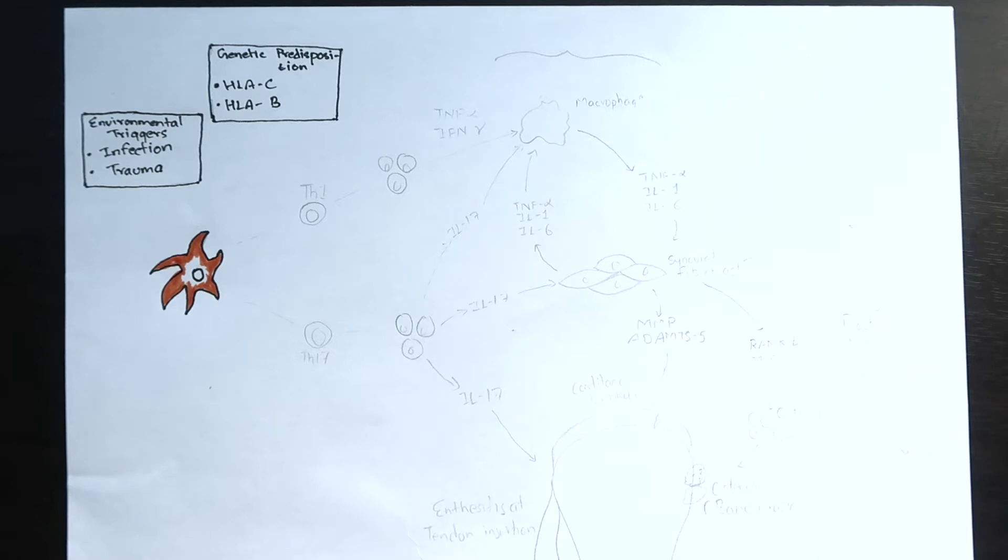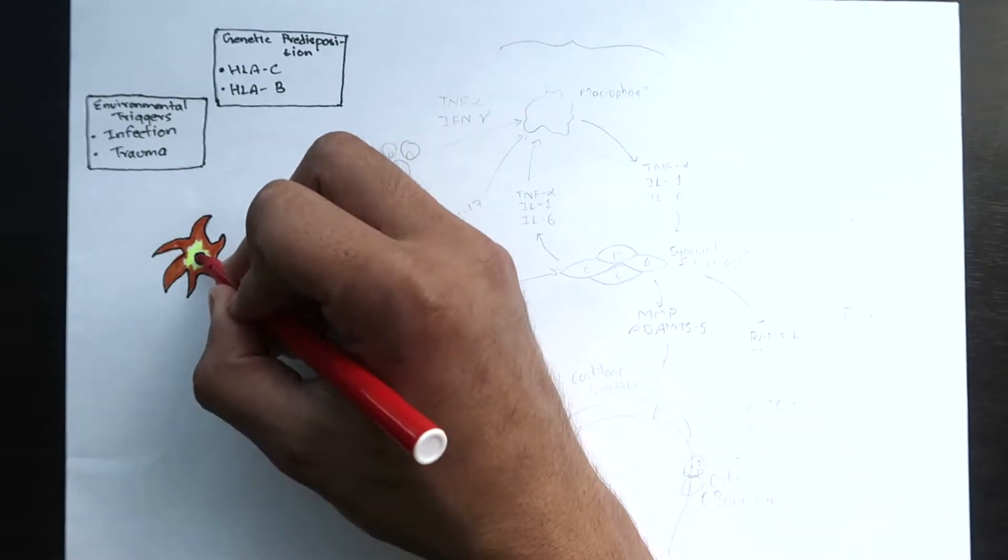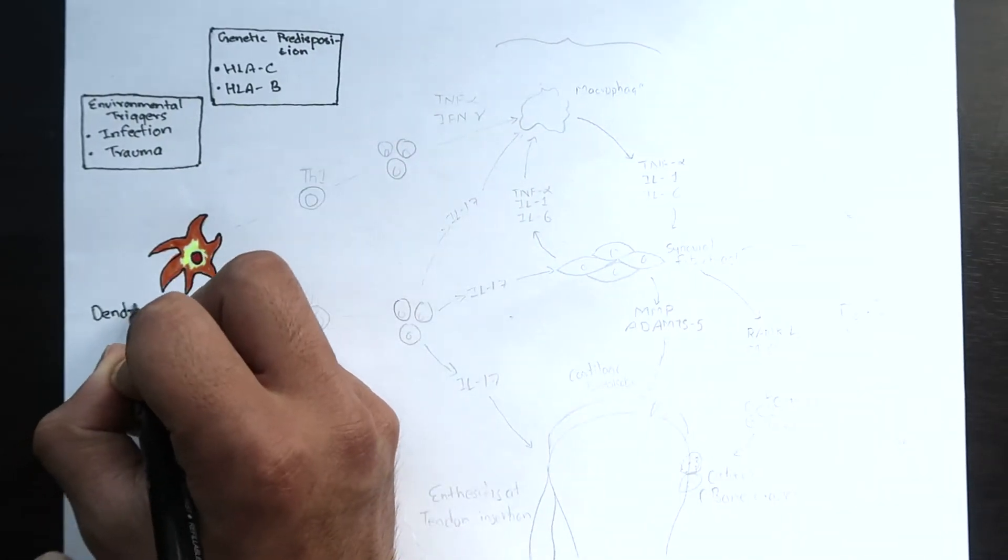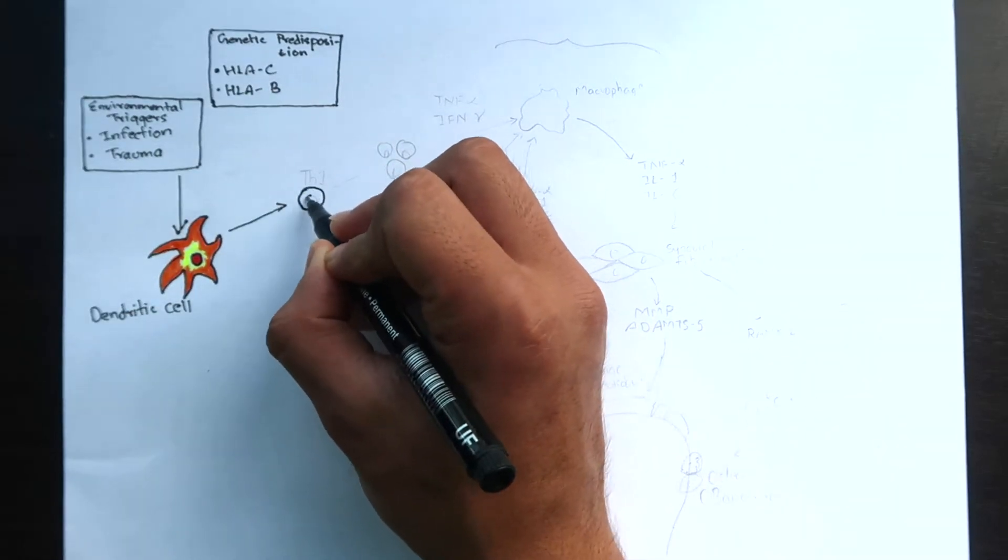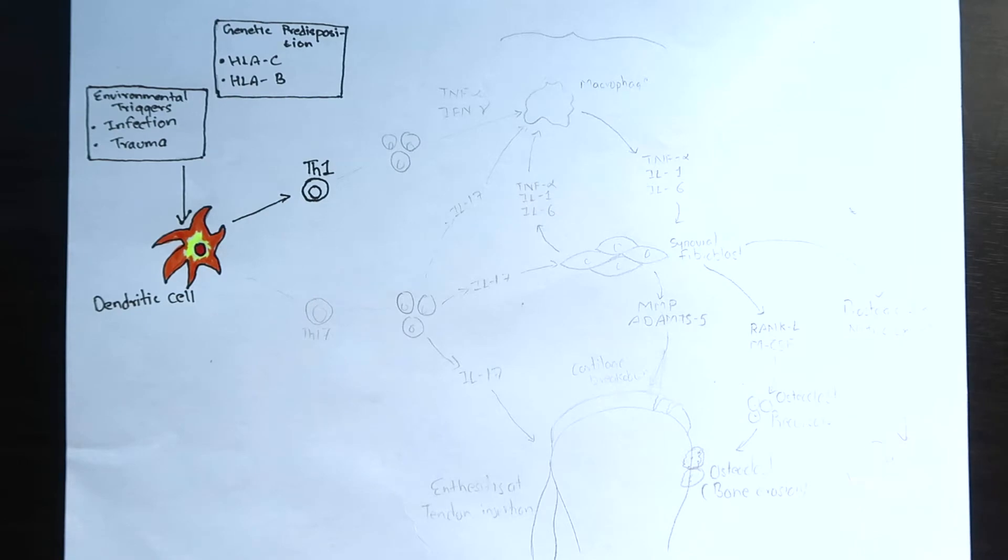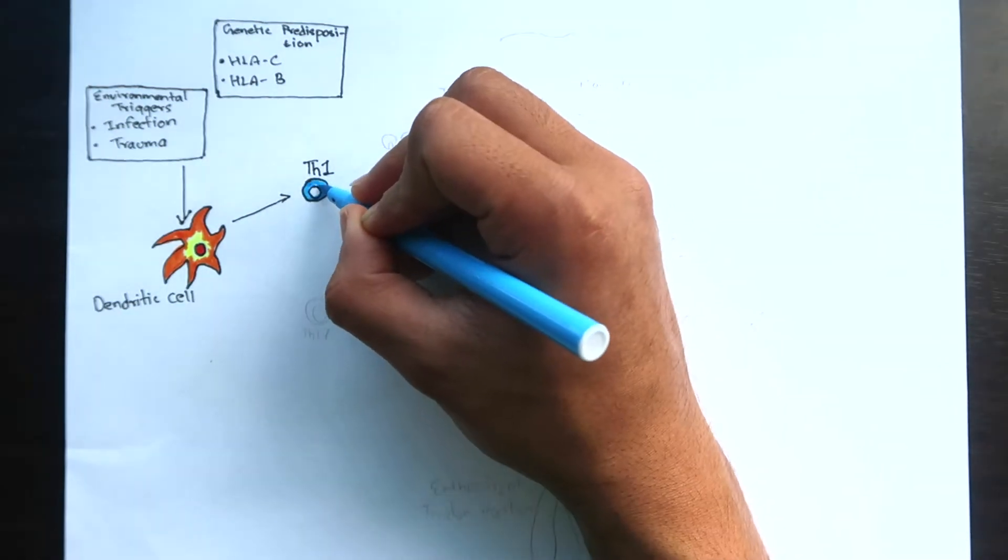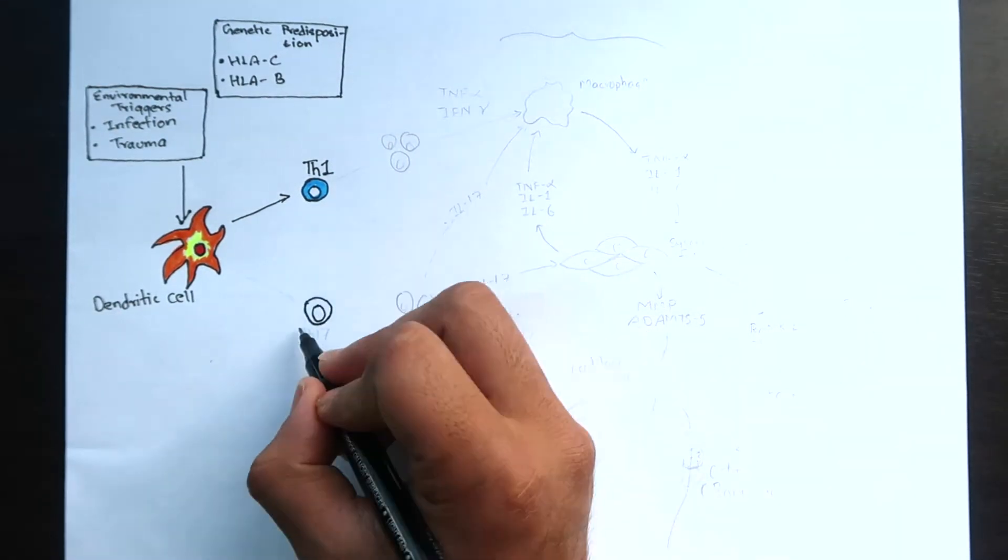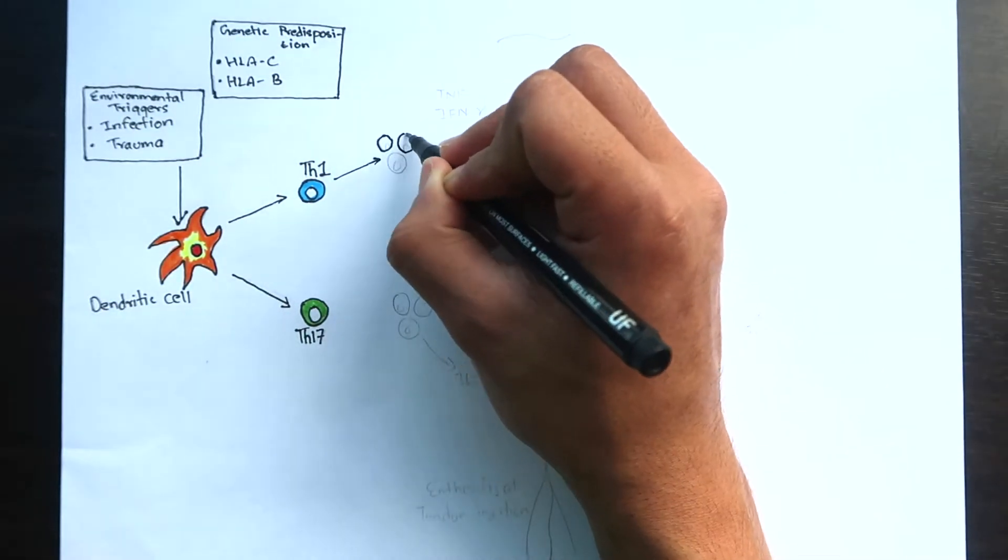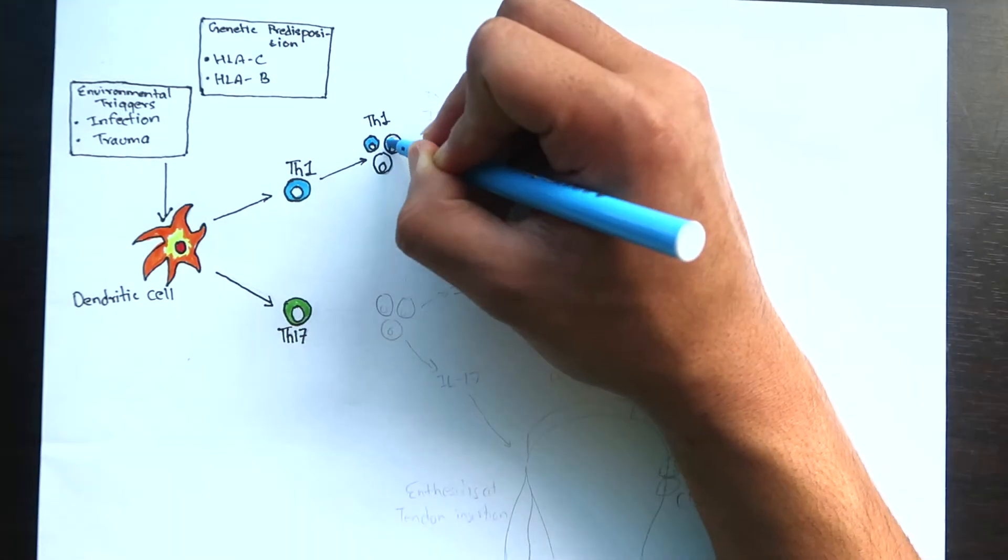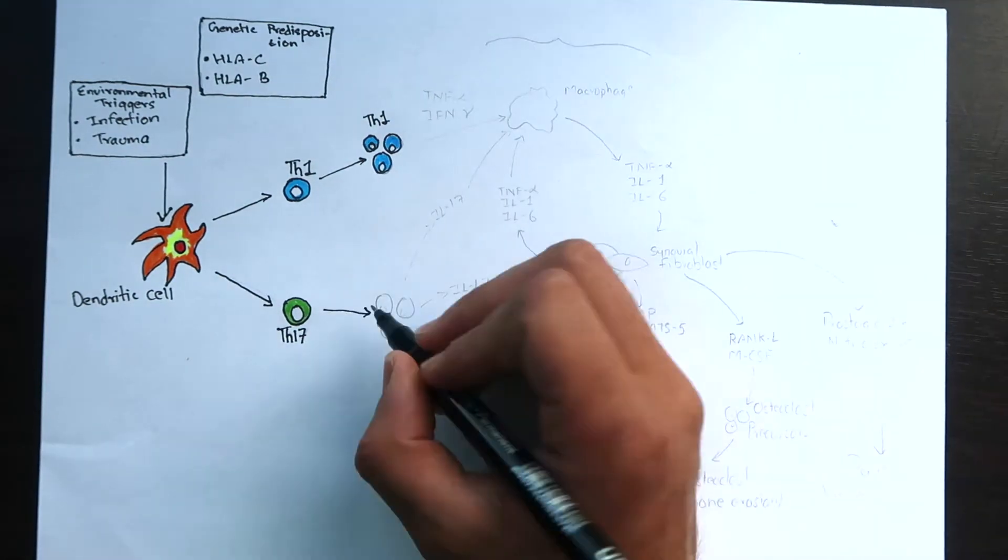The dysregulation of immune response activates the dendritic cells or antigen-presenting cells. Dendritic cells produce cytokines such as interleukin-12 which activates T helper 1 cells and interleukin-23 which activates T helper 17. Both of these cells proliferate after activation.